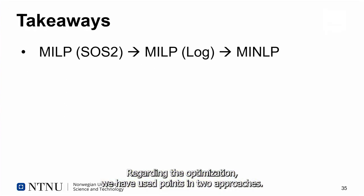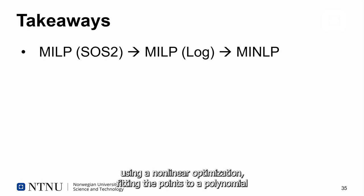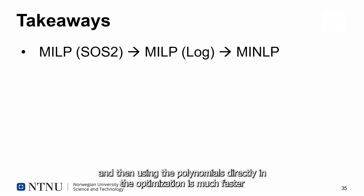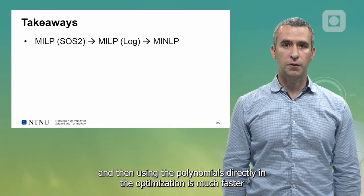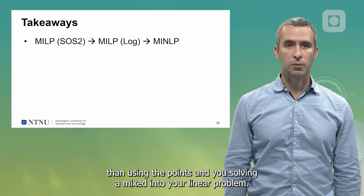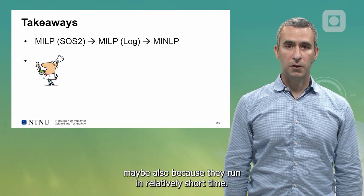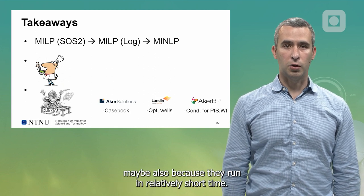Regarding the optimization, we have used points in two approaches, using SOS2 variables and the log formulation. But we found actually what runs faster is non-linear, using a non-linear optimization, fitting the points to a polynomial, and then using the polynomials directly in the optimization. It's much faster than using the points and solving a mixed integer linear problem. Sampling worked fine for our models, maybe also because they run in relatively short time.